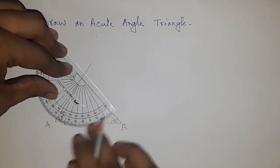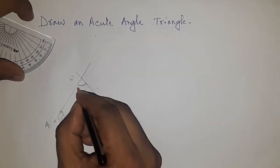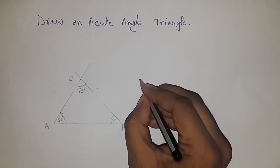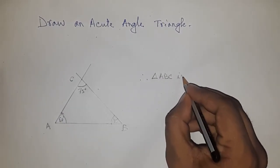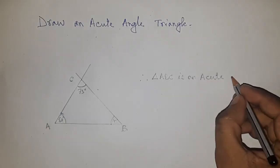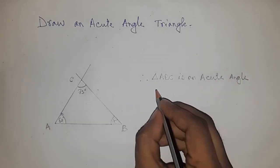All angles are less than 90 degrees and these are acute angles, so it is an acute angle triangle. Therefore, triangle ABC is an acute angle triangle.